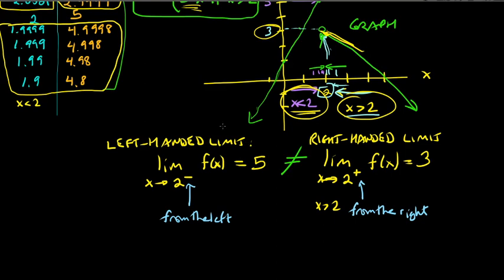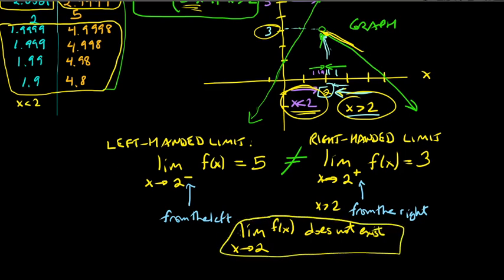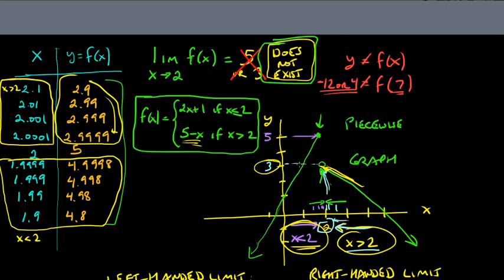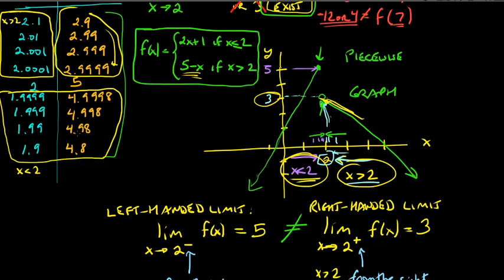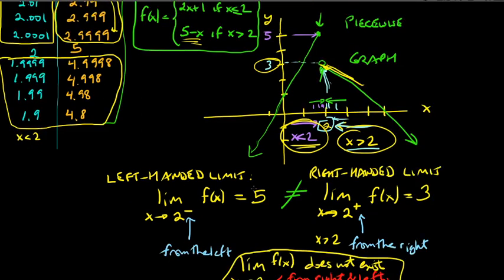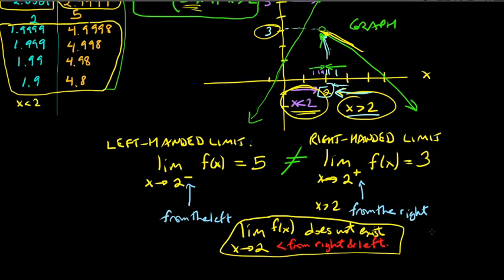When the right-handed limit and the left-handed limit are not equal — when they don't match — then the limit as x approaches 2, meaning from both sides, cannot exist. If you don't see a plus or minus sign, it means from both sides, and it has to be the same for both.